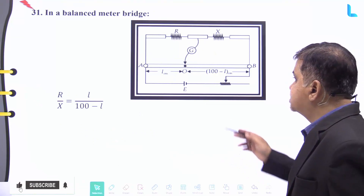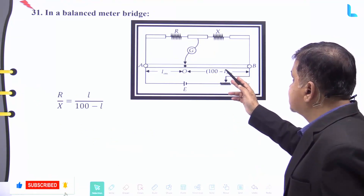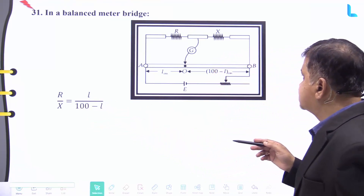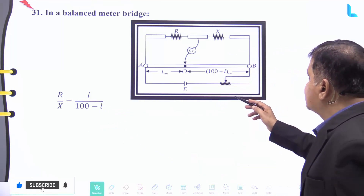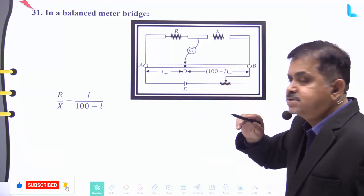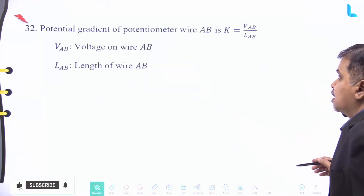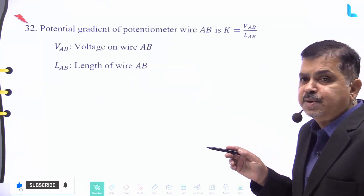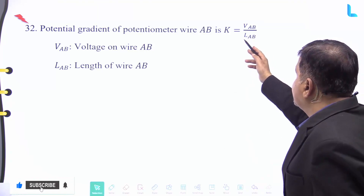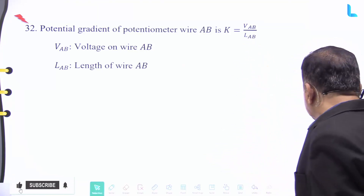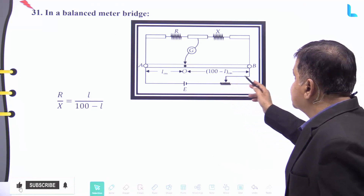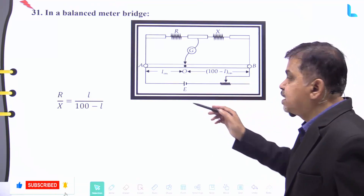In a balanced meter bridge, the unknown resistance X is given by R/X equal to L divided by (100 − L), where L is the balancing length. The potential gradient of a potentiometer wire AB is K equal to the voltage across AB divided by the length of the wire AB.